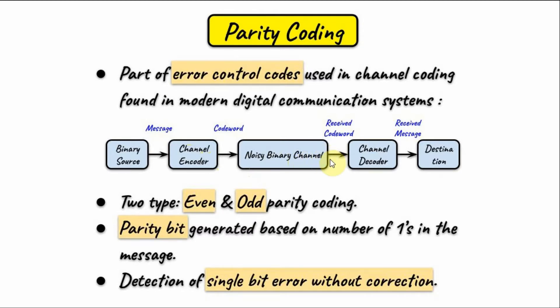The output of the channel is then the received codeword, which is fed into the channel decoder that determines whether an error has occurred in the received codeword. If there's an error, it will try to correct it and then extract the message. The received message is then passed into the destination.